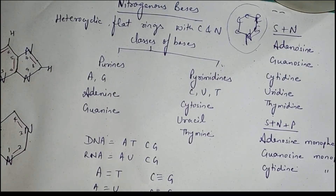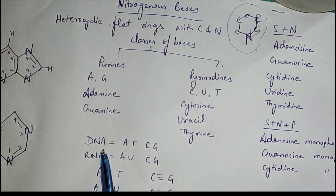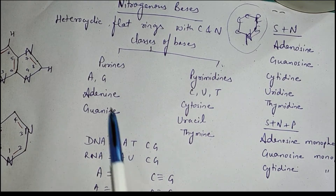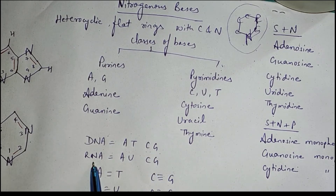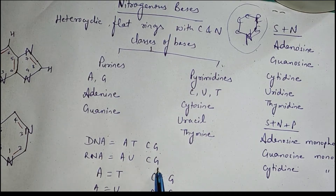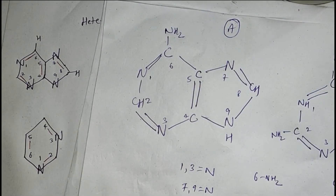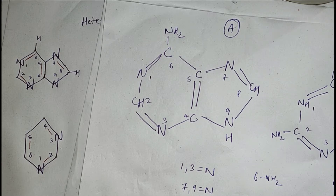So DNA and RNA have four types of nitrogenous bases. DNA has ATCG — that is adenine, thymine, cytosine, and guanine — and RNA has adenine, uracil, cytosine, and guanine. Now let's look at the structures of these nitrogenous bases. I will also tell you tricks to remember their structures, because sometimes in exams their structures are also asked.